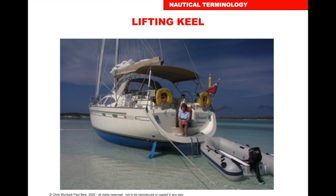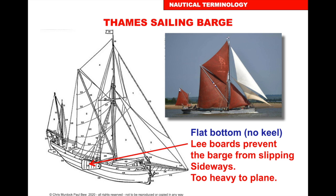Some vessels have a lifting keel - you can lift it right up inside just like a dinghy, and the boat sits happily on the seabed. The advantage is you can go into very shallow areas and places other vessels can't reach, and sit on the beach. A traditional example is the Thames sailing barge, traditional to the River Thames and the Thames estuary. They had flat bottoms to sit on the bottom or go into very shallow waters. To collect cargo like mud from shallow areas, they used centerboards on the sides called lee boards to prevent going sideways.